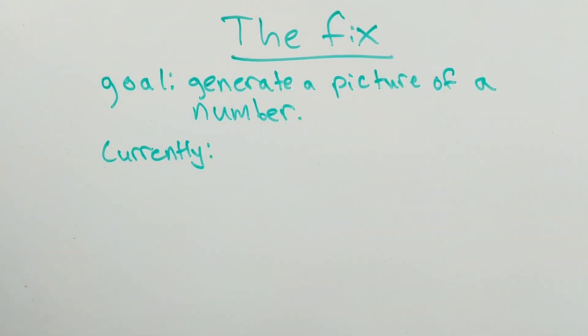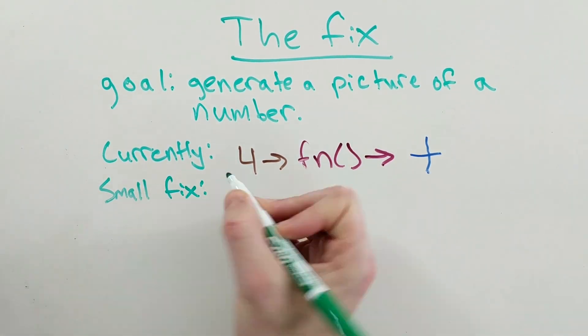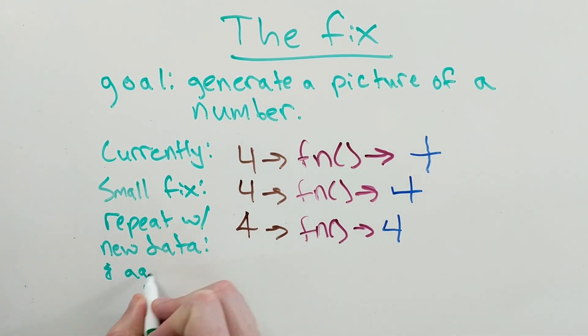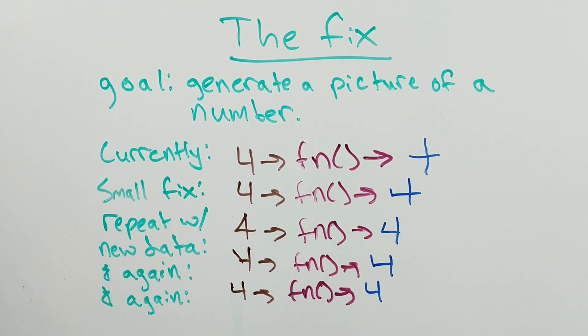Instead, by slowly adjusting the function, we can get iteratively closer and closer to the actual function, as long as we have enough examples.